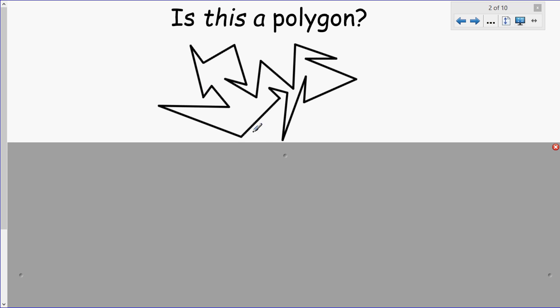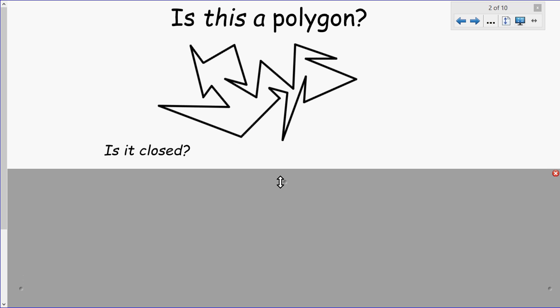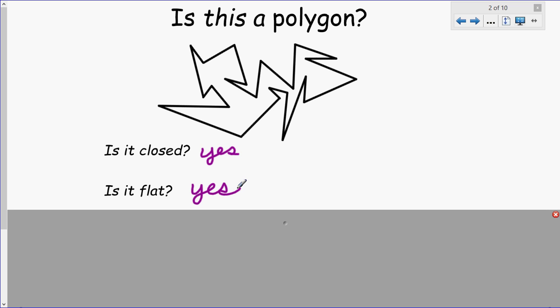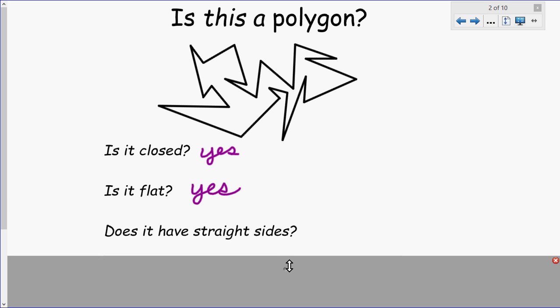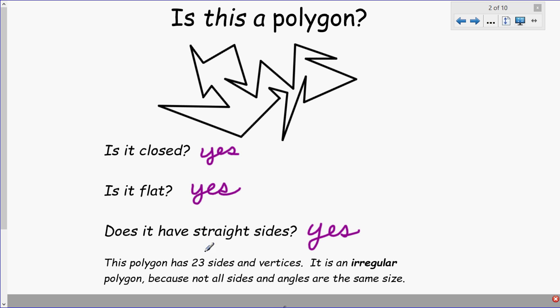Let's move on. Is this here a polygon? I want us to consider the definition. Is it closed? Yes, I don't see any openings. Is it flat? Yes, it doesn't look to have any 3D elements. And does it have straight sides? Yeah, they all look straight. Nothing looks curved to me. So it fits all the definitions, so that means it is a polygon. This polygon has 23 sides, if you count them all up, and vertices. Remember, vertices is the plural of vertex. I'm kind of coloring some of them in right now. Those are the vertices. There's 23 of them. It is an irregular polygon because not all the sides and angles are the same size.